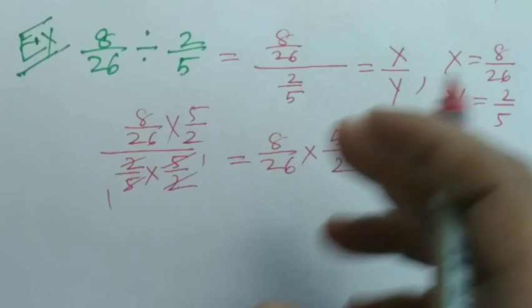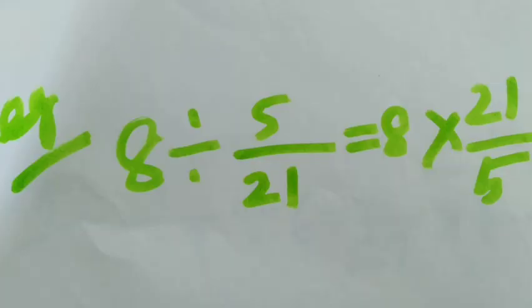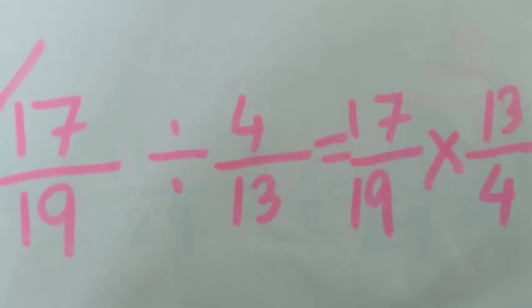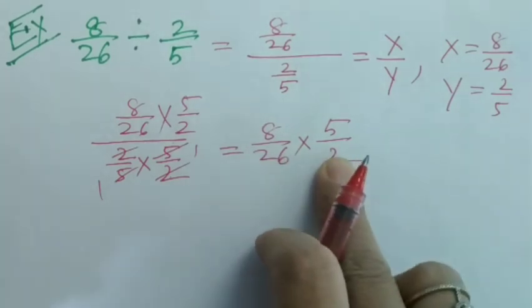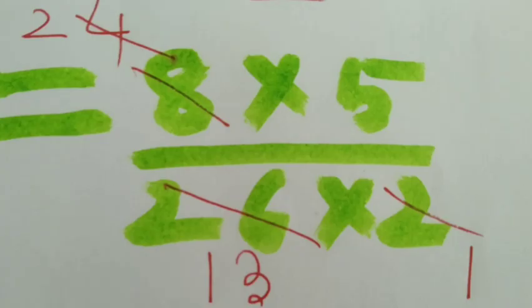That's how multiplying the dividend with the reciprocal of the divisor works. After that, we can do the sum easily by using the rule of multiplication which I have shown in my last video.